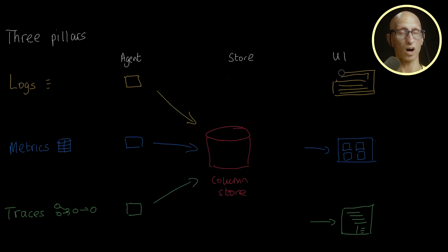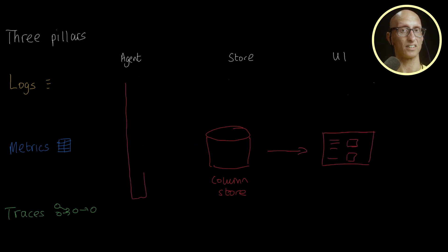And let's have a single UI to explore all this data. We can also have a single agent to collect the data instead of individual ones. So our stack now contains three components: the collector, the data store, and the UI.